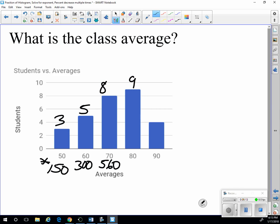9 times 8 is 72. So 9 times 80 would be 720. 4 times 9 is 36. So there would be 360 points that those students earned. Now I just need to add up all of the points. Here we have 450.